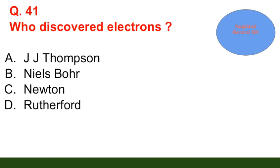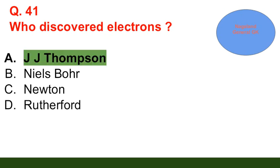Question number 41: Who discovered the electron? Option A: J.J. Thomson; option B: Niels Bohr; option C: Newton; option D: Rutherford. The correct answer is option A — J.J. Thomson.